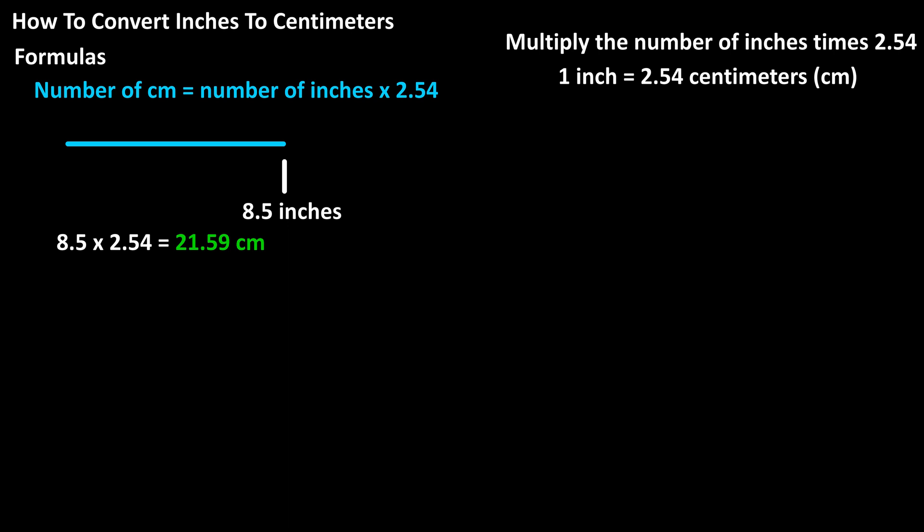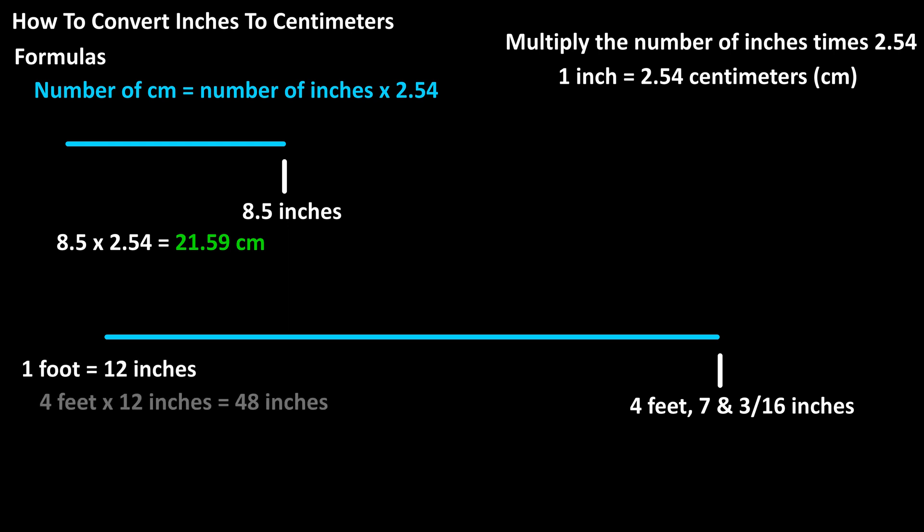As a more complex example, if you measured something that was 4 feet and 7 3/16 inches, then we would first convert the feet to inches. There are 12 inches in 1 foot, so 4 feet would be 4 times 12, which equals 48 inches.